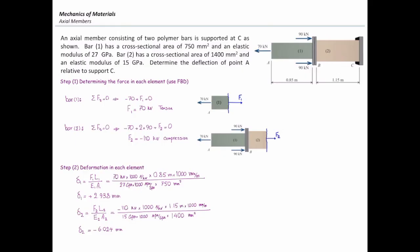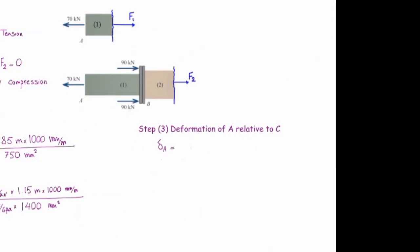These two deformations have opposite sign. The positive sign means that element number one elongates. And the negative sign for second element means that element number two is compressing. It gets shorter. How much is total movement of point A relative to C? In that case, I simply add the deformations together. So, delta at A is equal to delta one plus delta two.